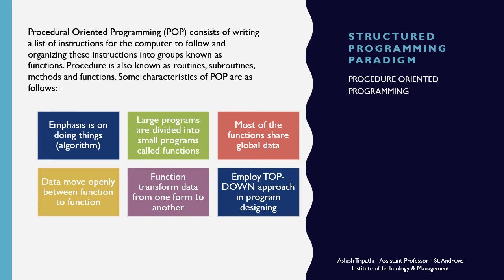For example, when writing a program for a calculator, we divide it into small functions like addition, subtraction, multiplication, division, and so on. The main function does the work of passing input parameters to these functions and getting the result. In this way, procedure-oriented programming solves the problem of writing complex programs, but there are still some drawbacks like data security.